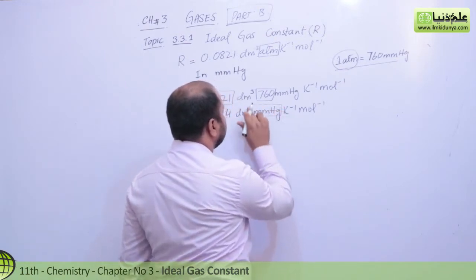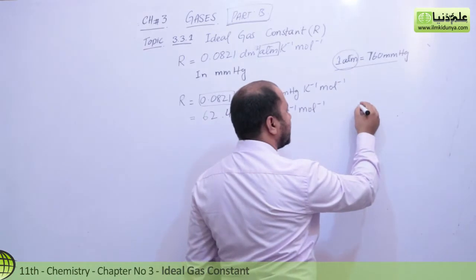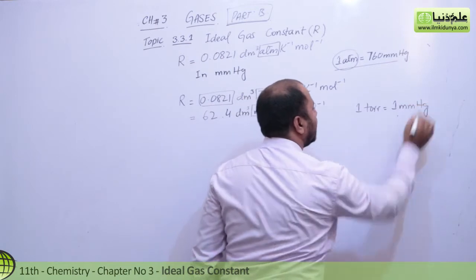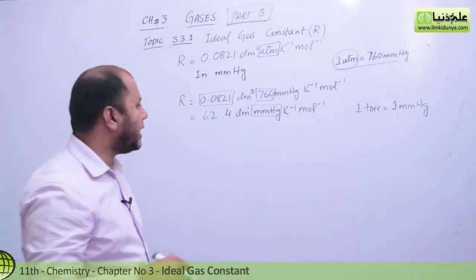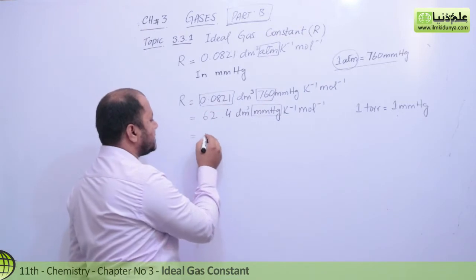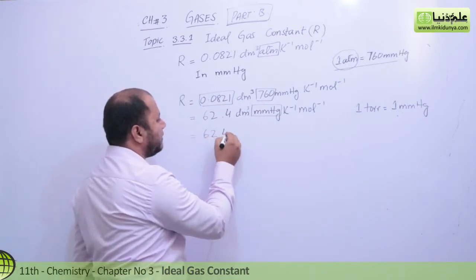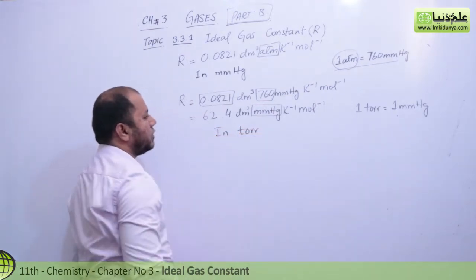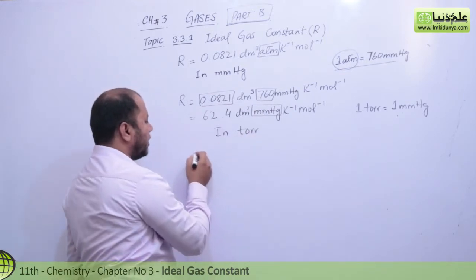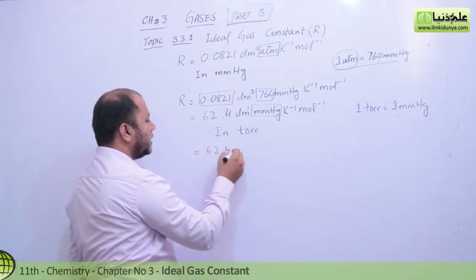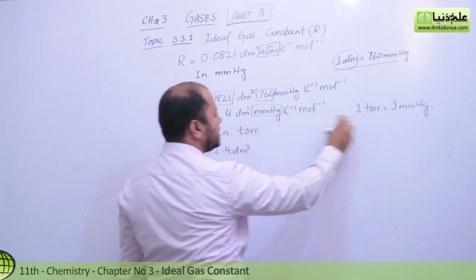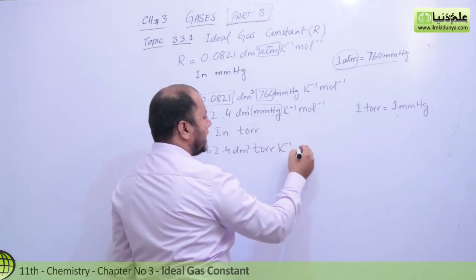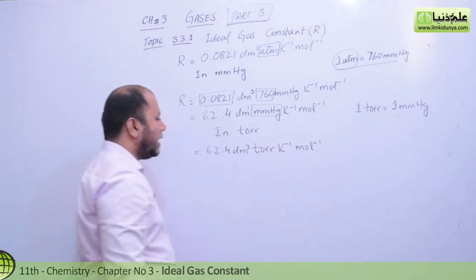You can also convert mm of Hg into Torr. You should know that 1 Torr equals 1 millimeter of Hg. So, students, this gives us the equation 62.4 — that is, you are converting the unit from mm of Hg into Torr. So that will be 62.4 dm³·Torr per kelvin per mole.